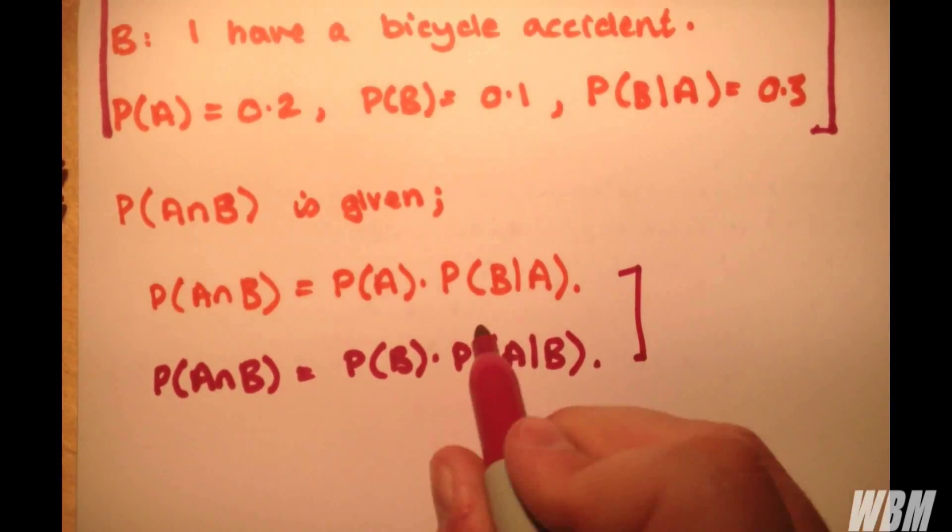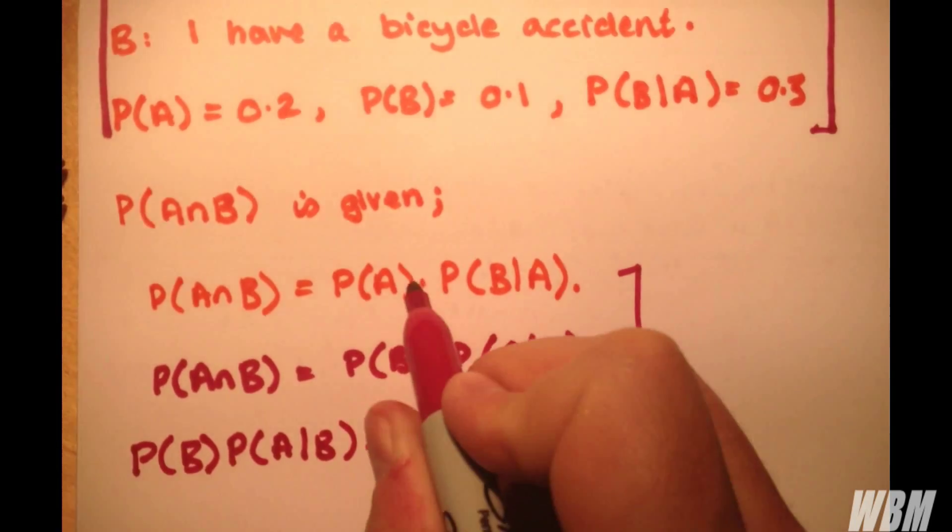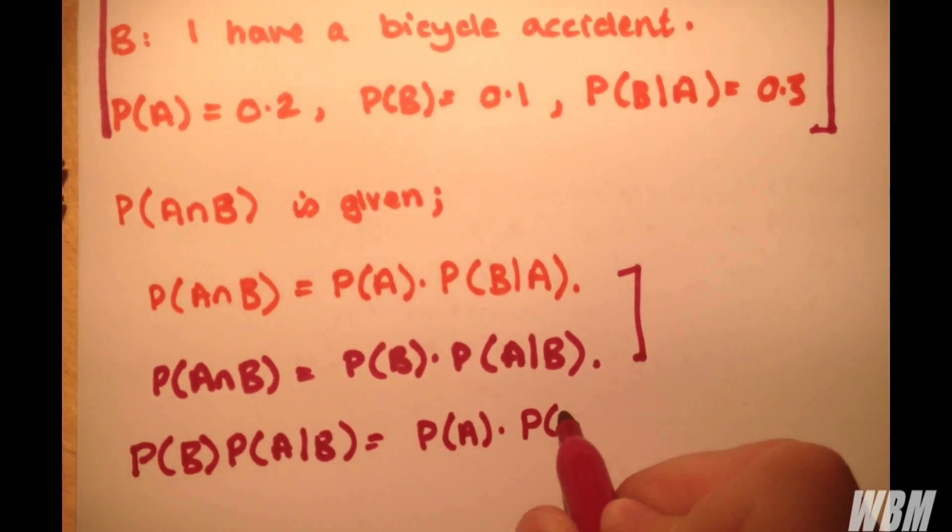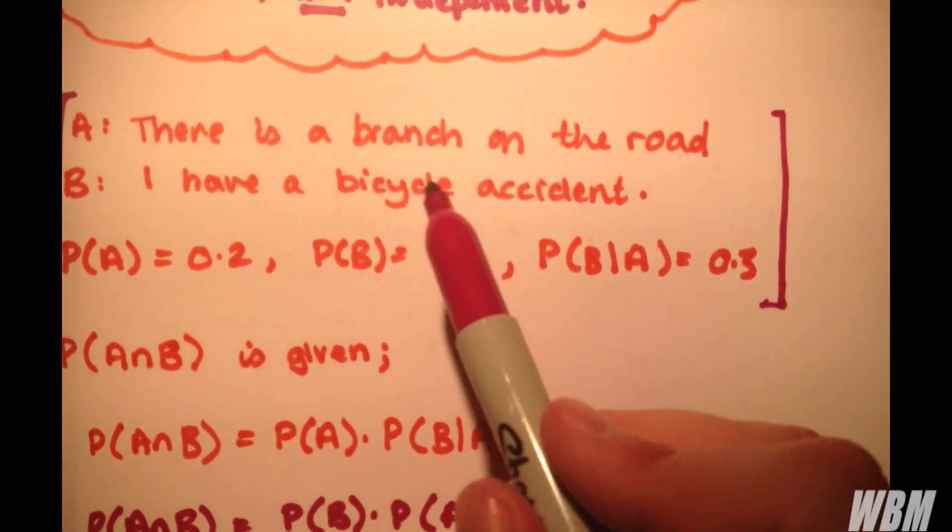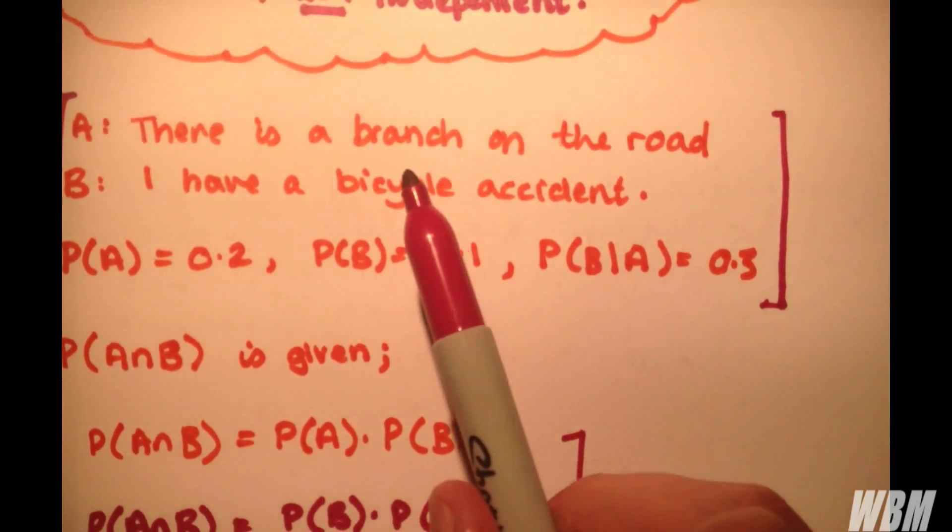So if we equate these two, then we end up with probability of A given B. Now, in the question, we're given the probability of B given A, but say I want to find the probability of A given B. You know, given that I've had a bicycle accident, what's the probability it was caused by a branch?